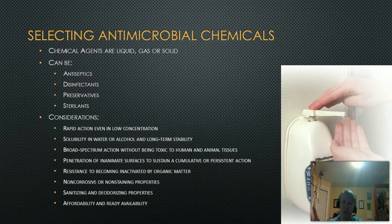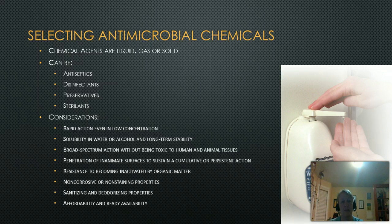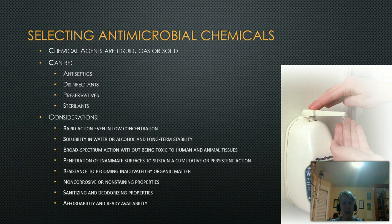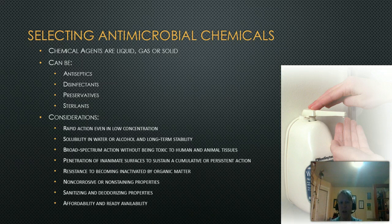Penetration is always important — how can a chemical kill if it can't get through to wherever it needs to be on a permeable surface? You also want it to be resistant to being inactivated; if you put it on a bench top, you don't want it to react with the surface and become inactivated. You don't want it to be corrosive to your surfaces either, otherwise you'll be replacing countertops very often. Sanitizing and deodorizing properties, affordability, and ease of use are also considerations when looking at types of chemicals.